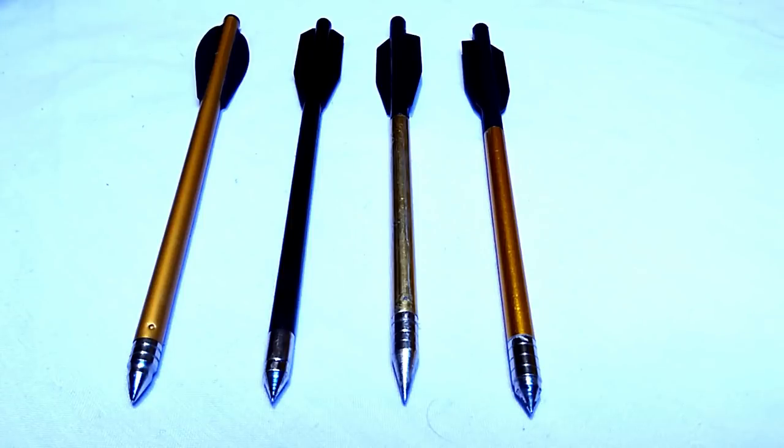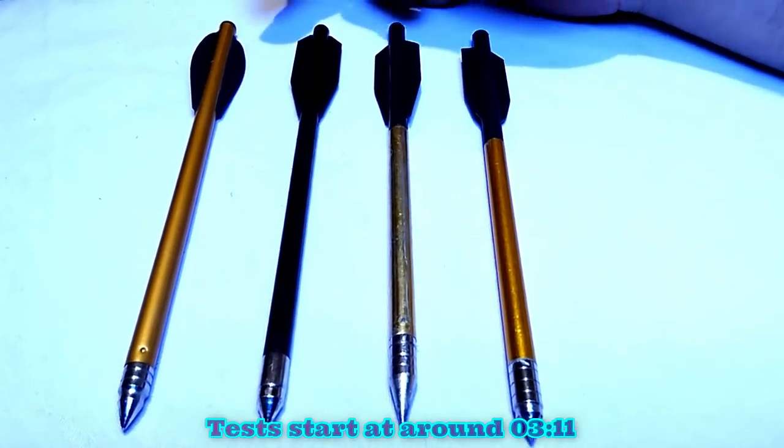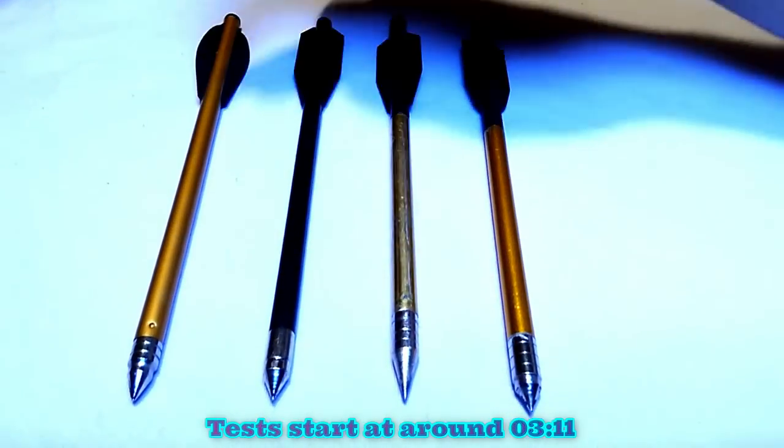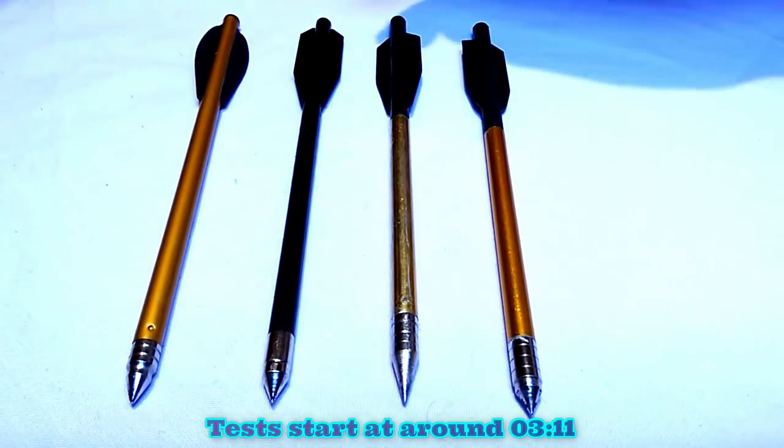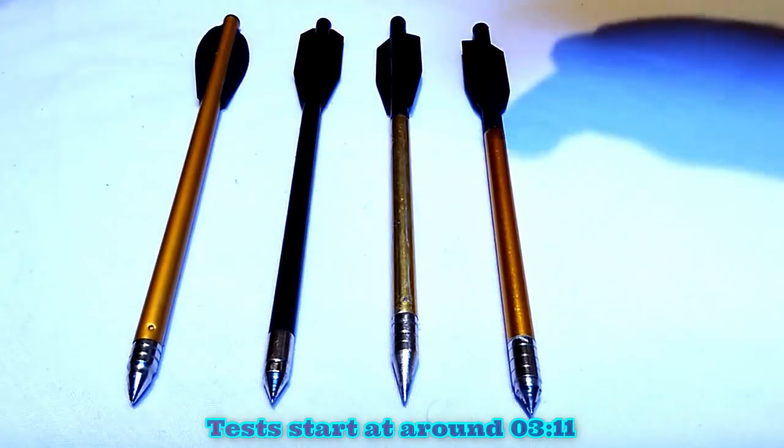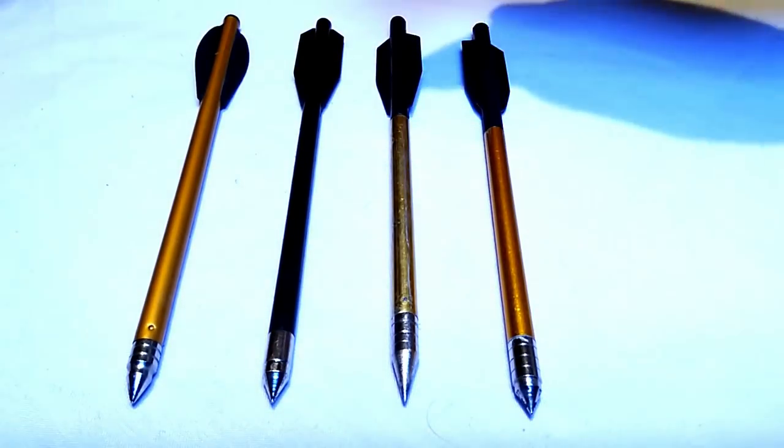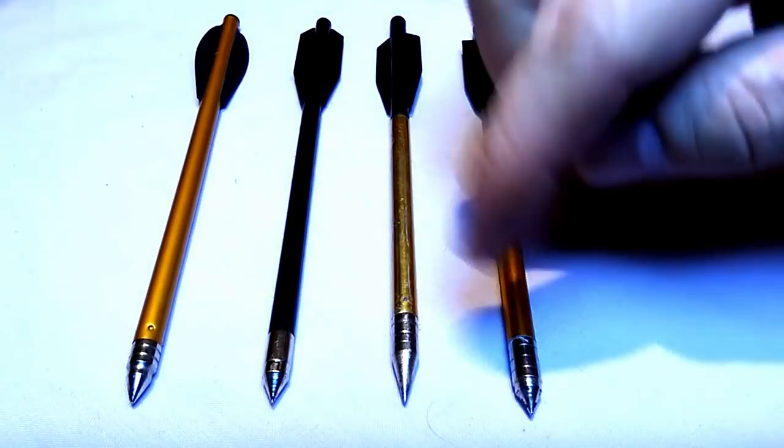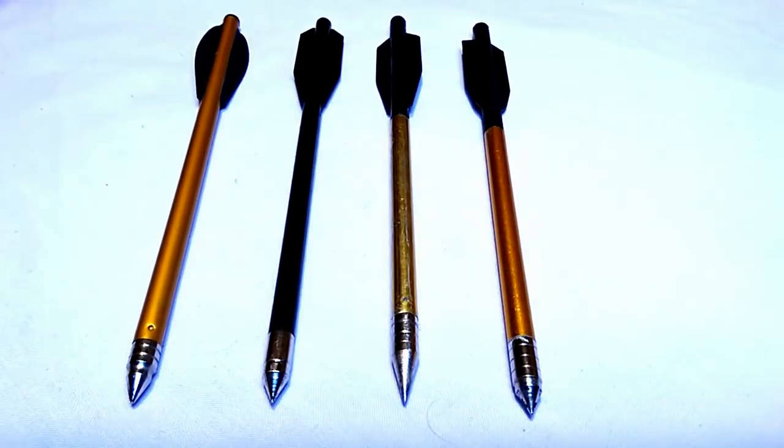These are the more common ones you can get. What I have here is a full aluminum bolt, an ABS bolt, and two aluminum and ABS bolts but that have different style tips.